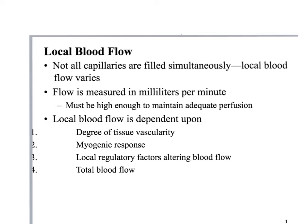Local blood flow is dependent upon a couple different things. First, the degree of tissue vascularity — what does that mean? Vascularity refers to the arteries and vessels that are present. Tissues have different amounts of blood vessels; some have more, some have less. Give me an example of a tissue that has lots of vasculature, lots of blood vessels.